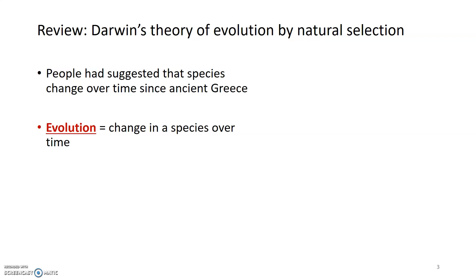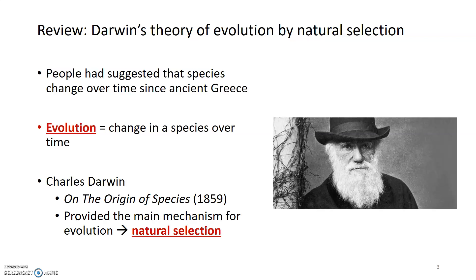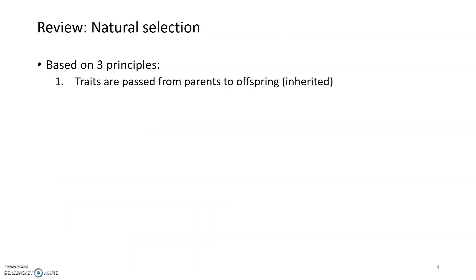Just to bring everyone back up to speed and make sure we're all familiar with the terms, I'm going to do a brief review of Darwin's theory of evolution by natural selection. People had suggested that species change over time for thousands of years before Darwin proposed the mechanism, noticing these changes since ancient Rome and Greece. Evolution is how we define that change in species over time, and Charles Darwin gave us the first mechanism to explain it. In 1859 he published his book On the Origin of Species, which included observations from his travels in the Galapagos.